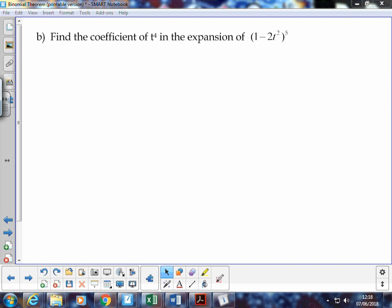Exercise 4b. Find the coefficient of t to the power 4 in the expansion of (1 minus 2t squared) all to the power 5.